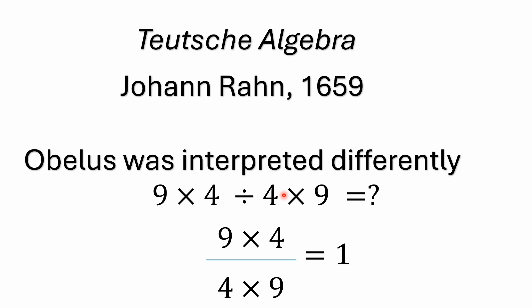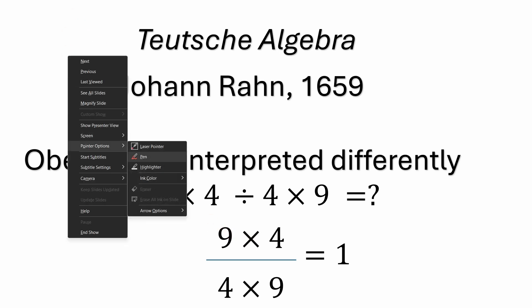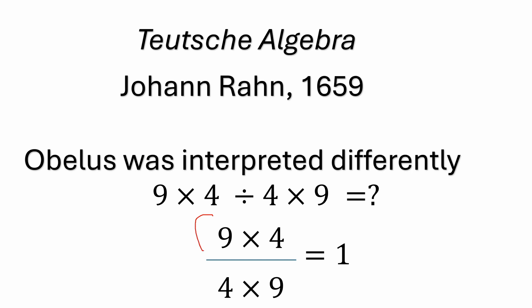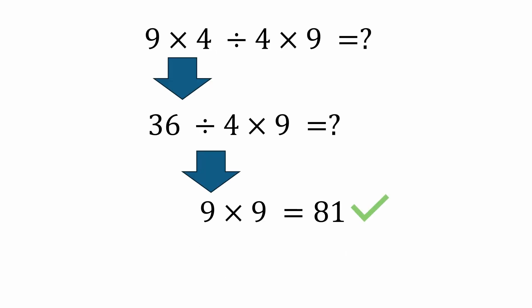I've written that out: basically 9 times 4 over 4 times 9. If you were to do this — drawing in some parentheses here — you'd have 9 times 4 divided by 4 times 9, which is 36 divided by 36, and that would equal 1.